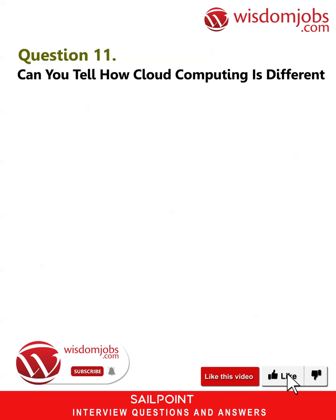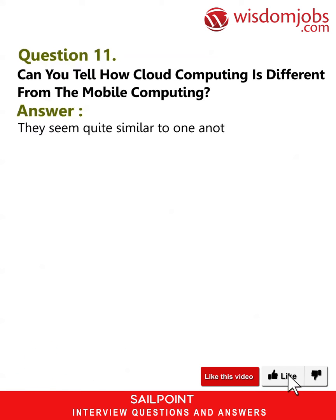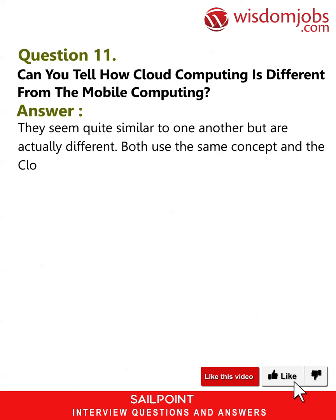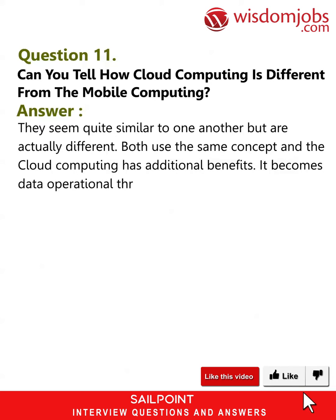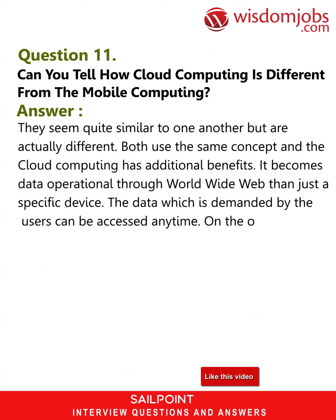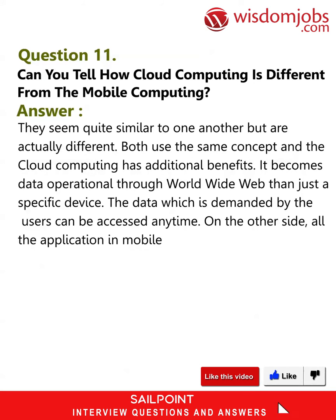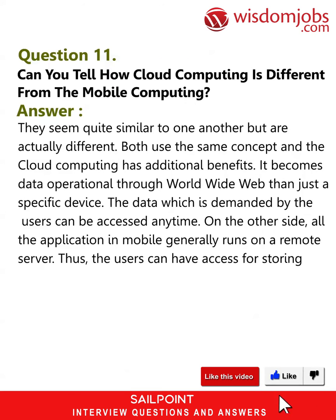Question 11: How is cloud computing different from mobile computing? They seem quite similar but are actually different. Both use the same concept, but cloud computing has additional benefits — it becomes data-operational through the worldwide web rather than just a specific device, and data can be accessed anytime. On the other side, applications in mobile generally run on a remote server, allowing users access for storing and managing data.